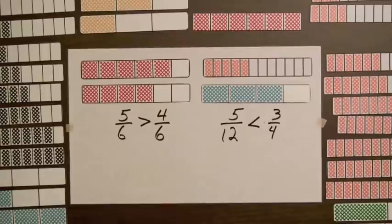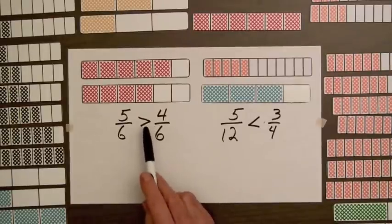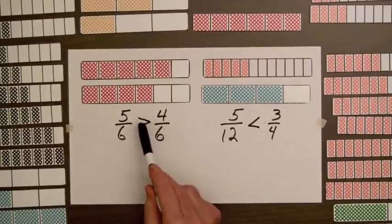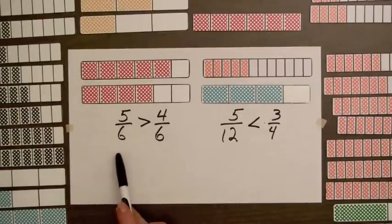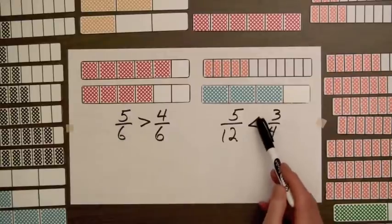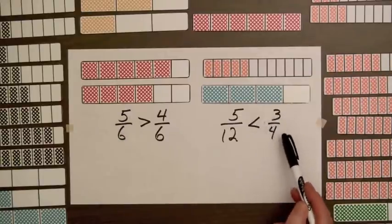One way to remember these symbols that students sometimes have trouble with is to think of the opening here as a mouth that faces the larger number. So here five-sixths is larger, and over here the mouth faces the larger number three-fourths.